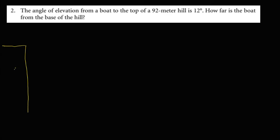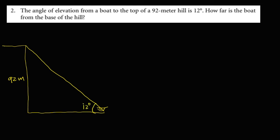For this given: the angle of elevation from the boat to the top of a 92-meter hill. So if this is the 92-meter hill, and the angle of elevation to the boat is always with the horizontal line — this angle is 12 degrees — then how far is the boat from the base of the hill? This distance is the unknown. Based from the given, if this is our reference angle, we have the opposite and the adjacent, so we use tangent.